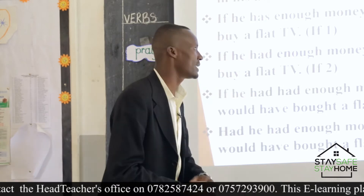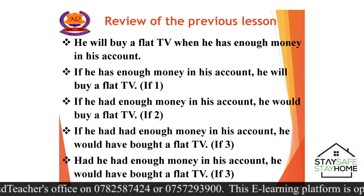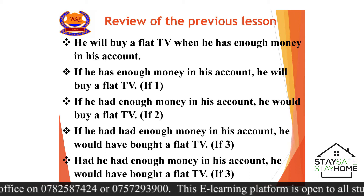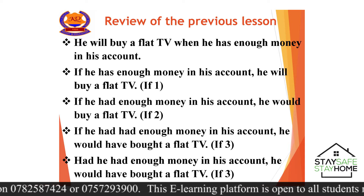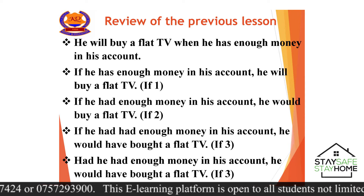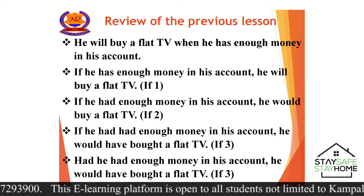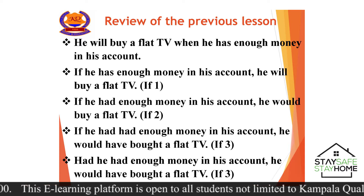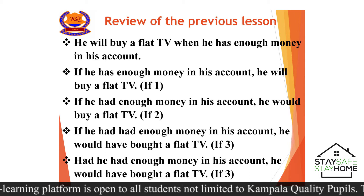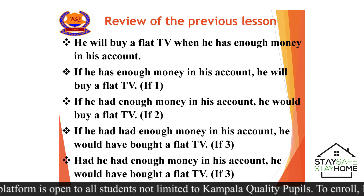Let us take a look at these examples. He will buy a flat TV when he has enough money in his account. This sentence has a condition and has a result. The result is he will buy a flat TV. But when will he buy a flat TV? That is only when he has enough money in his account. When we looked at if one, we said that "when" can be used in the place of "if" — that is if one.